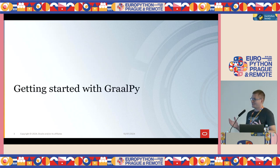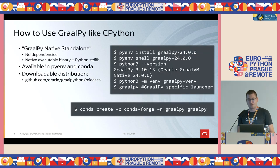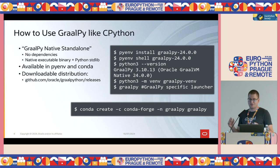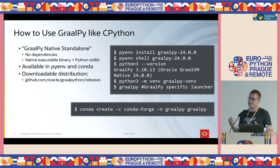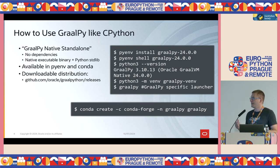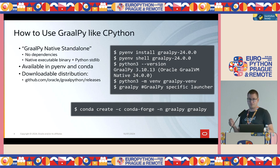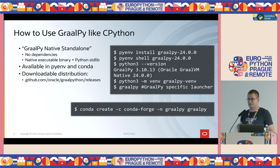Let's see how we can get started working with GraalPy. The first mode is where you want to use GraalPy as a CPython replacement — it will run on GraalPy but you would use it like CPython. This is what we call GraalPy native standalone distribution. It has no dependencies; it only contains the native executable Python binary, that's the interpreter, the runtime that runs your Python code, and the Python standard library, which we mostly share with CPython except for a few minor changes, including the native extensions in the standard library.